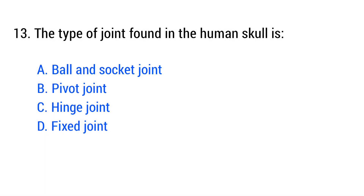Question number 13. The type of joint found in the human skull is? The right answer is option D: Fixed joint.